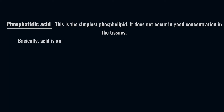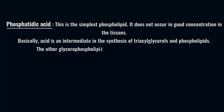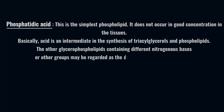Before discussing the examples of phospholipids, let us first understand what phosphatidic acid is. It is the simplest form of phospholipid and does not occur in high concentration in tissues. Phosphatidic acid is an intermediate in the synthesis of triacylglycerol and other phospholipids, meaning it is very key to the synthesis of other phospholipids.